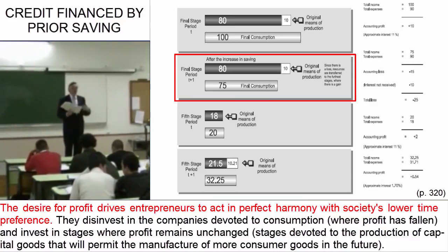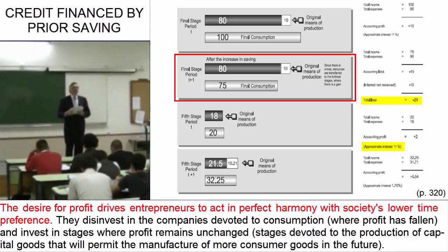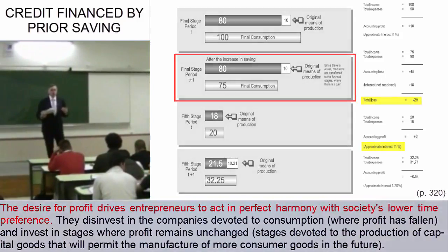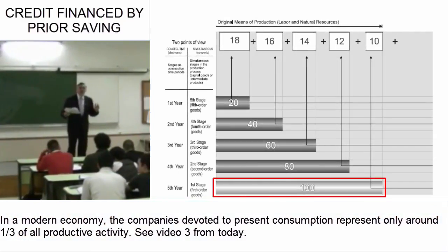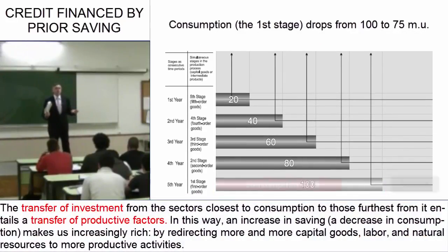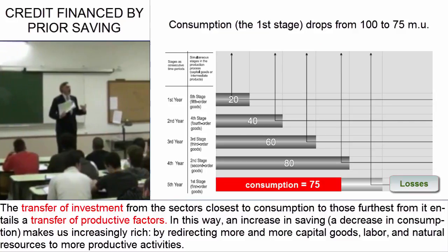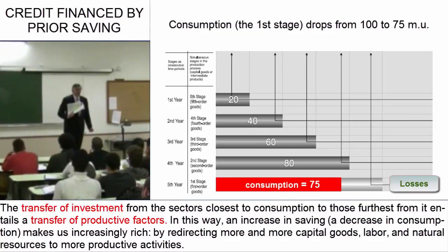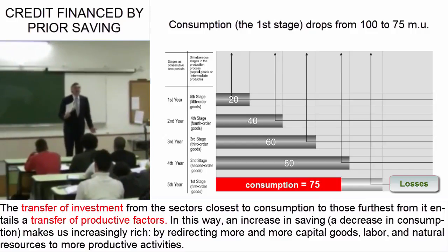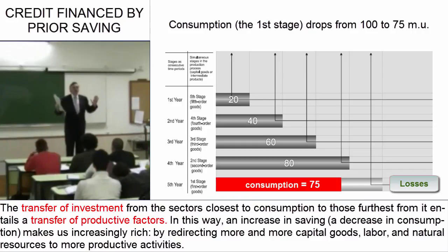At period T plus 1, consumption drops to 75 units. Note that profits in the stages far from consumption are much larger than those in stages close to consumption. Companies devoted to the final stage of consumption represent only about one third of all productive effort, and they now slip into decline with lower profits. The Corte Inglés, selling less, will not hire more workers or expand facilities — quite the opposite. Owners of companies close to consumption must free up labor, stop hiring, or lay off workers.